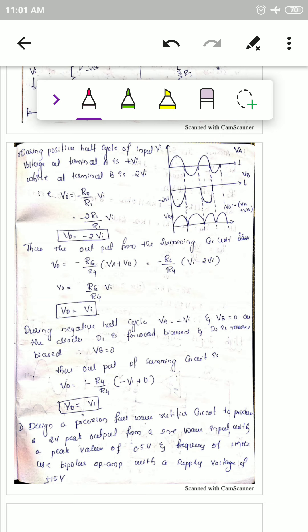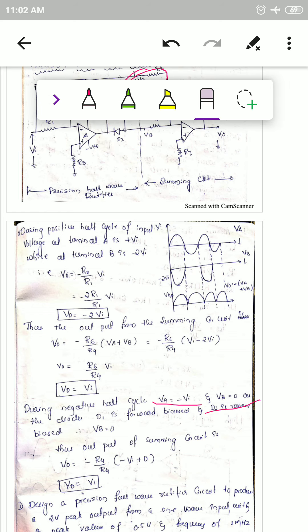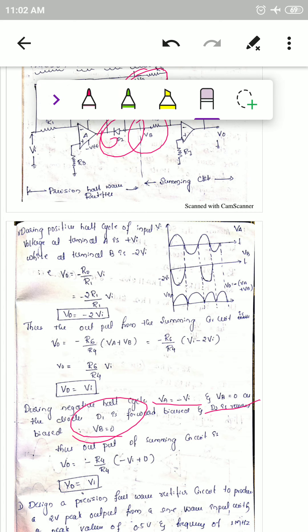During the negative half cycle, VA equals minus vi because the applied input is negative. At point VA the voltage is minus vi. With a negative input applied, the output of the op-amp is positive, so the diode is reverse biased — its cathode receives positive polarity. The circuit opens at that point, so VB becomes zero during the negative half cycle.